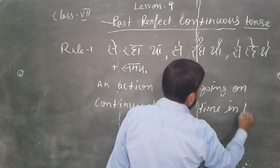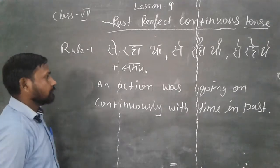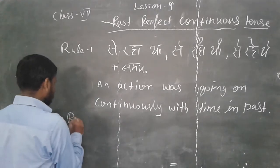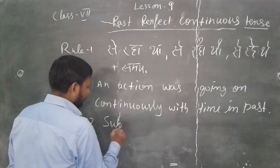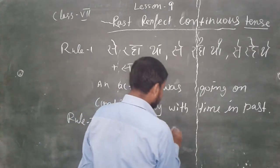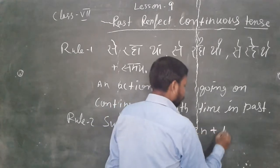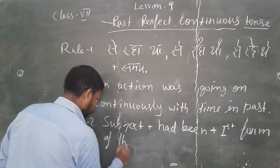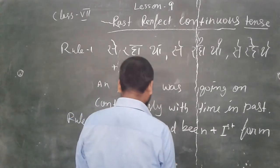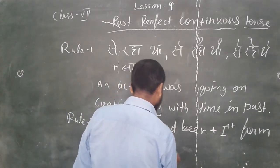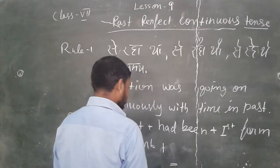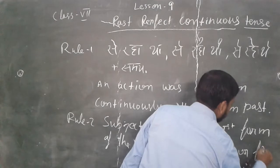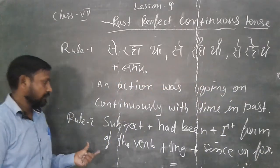So that is past perfect continuous tense. Now let's see rule number two: first you will add the subject, then you will add 'had been', and thereafter the first form of the verb plus '-ing', plus 'since' or 'for'.